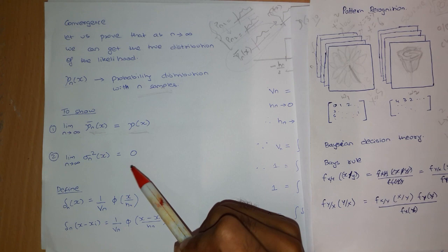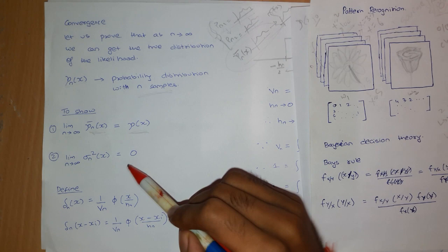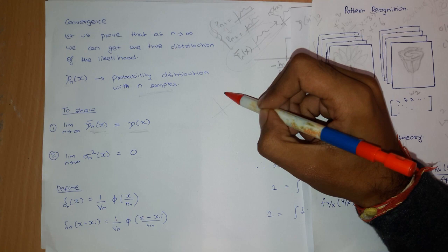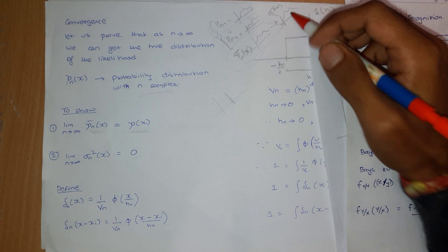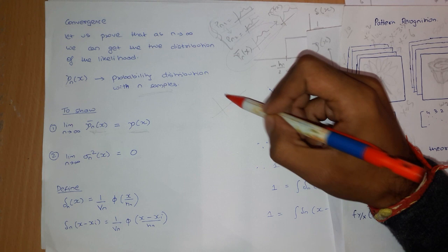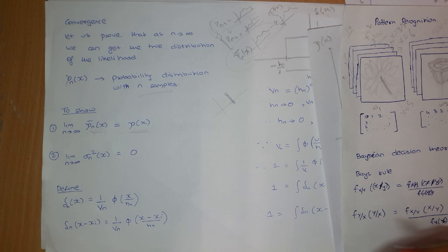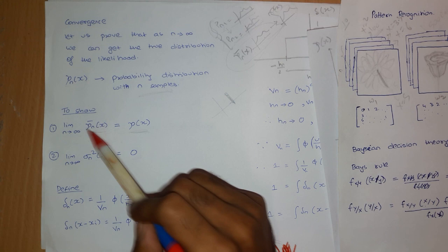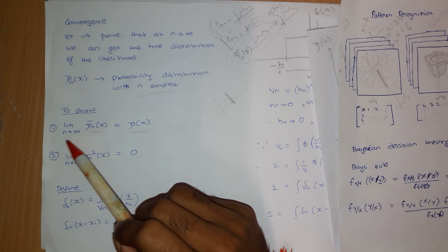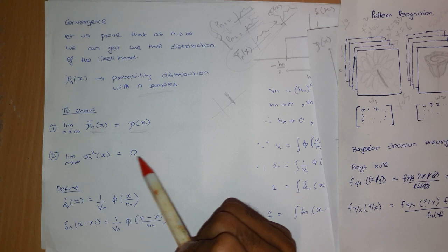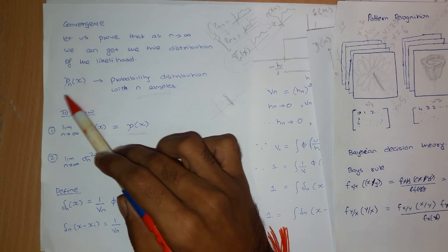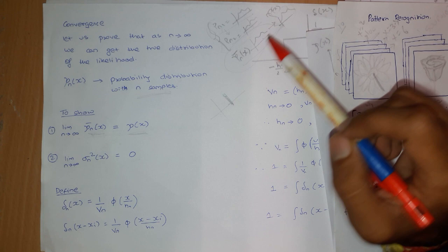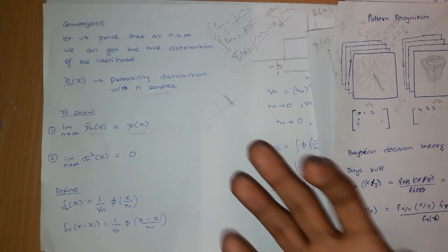The second thing we want to show is that the variance of these 10 distributions will be equal to 0. When I say the mean is the same as the true distribution and there is no variance — variance 0 means the data is not varying. So if we prove that the mean of this thing equals the true mean as n tends to infinity, and the variance equals 0 as n tends to infinity, then we can infer that p_n — this distribution — is tending to the true distribution. This is what we want to prove about the Parzen window technique.